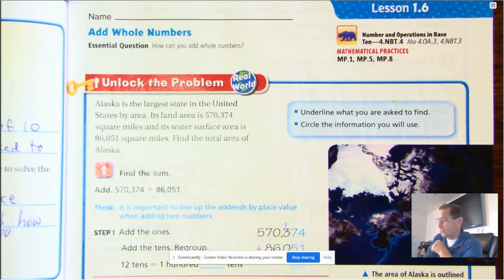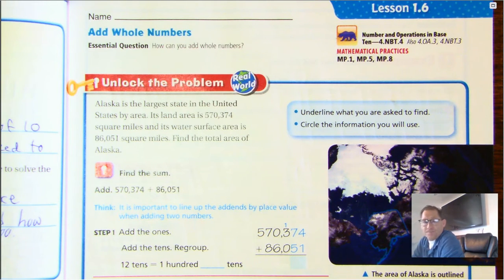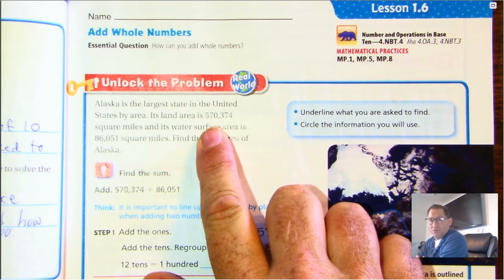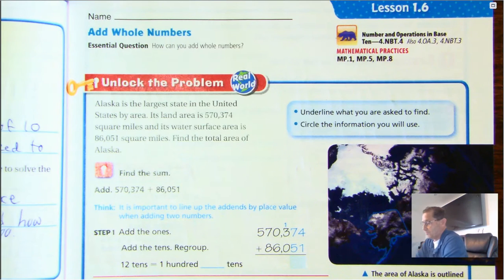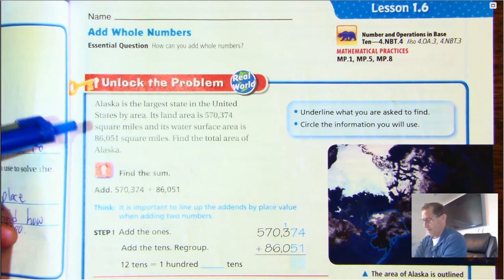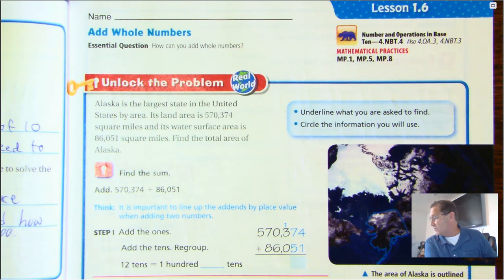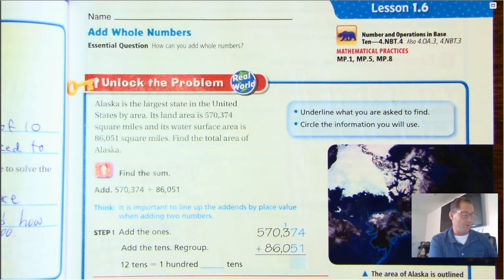Our Unlock the Problem today: Alaska is the largest state in the United States by area. Its land area is 570,374 square miles and its water surface area is 86,051 square miles. Find the total area of Alaska. It says underline what you were asked to find, so start there.